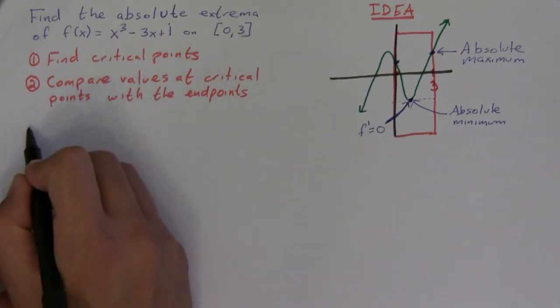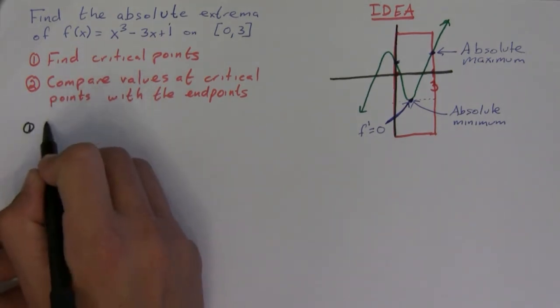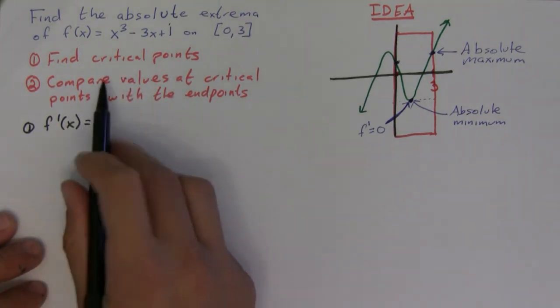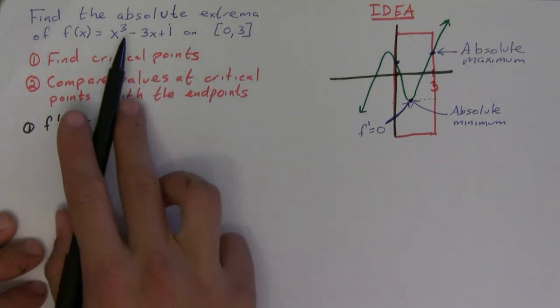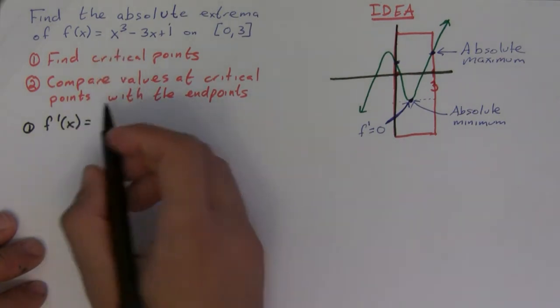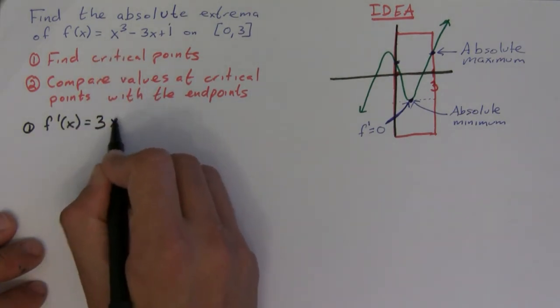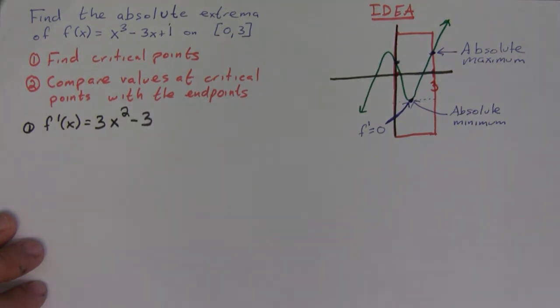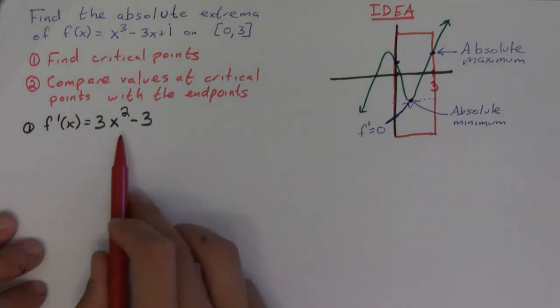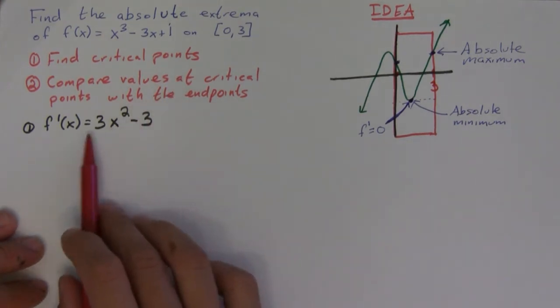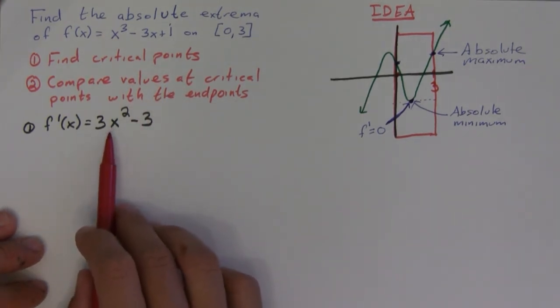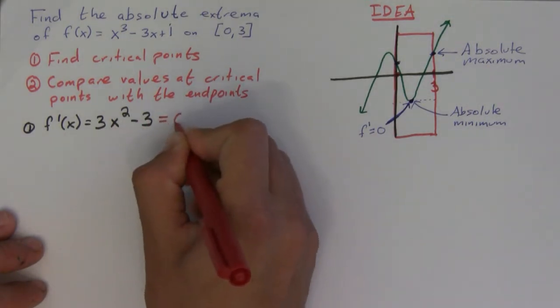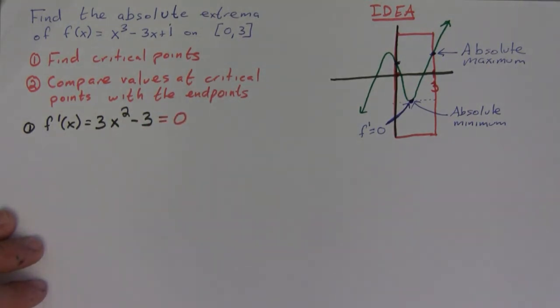So let's do the first part: to find the critical points we need to first find the derivative and then set it equal to zero to solve it. Now the derivative of this one, it's pretty simple: it's just 3x² - 3. And remember, the critical points are where the derivative is either zero or undefined. This is a polynomial so it's not undefined anywhere, so we're just going to set it equal to zero and solve it.